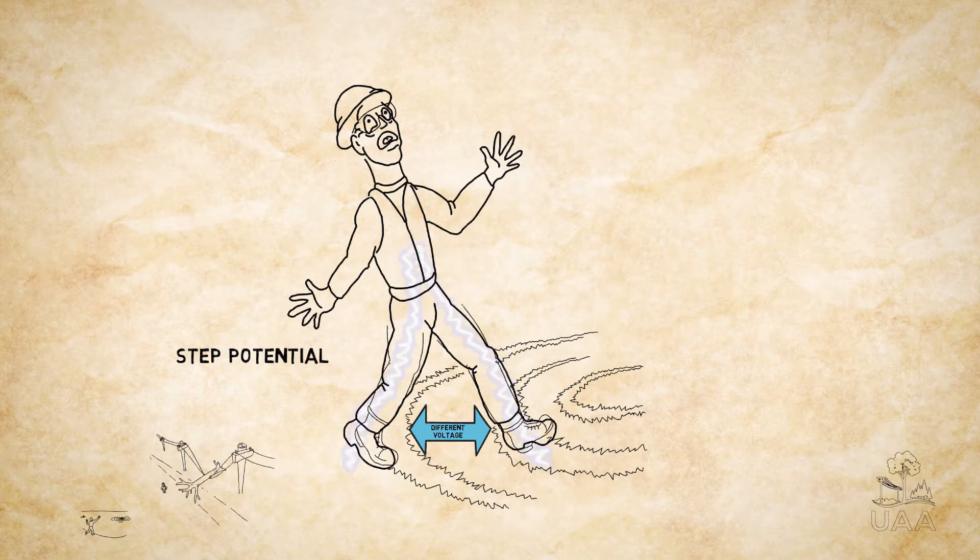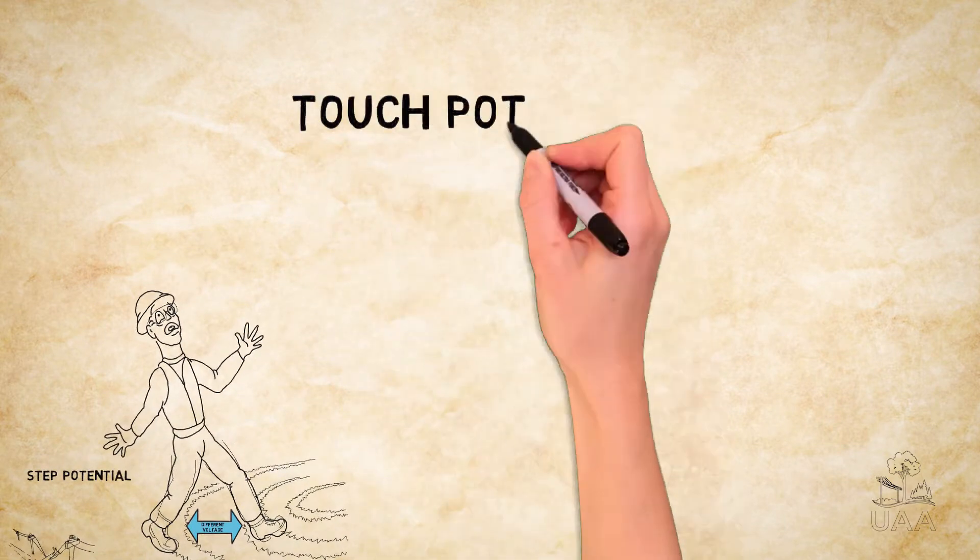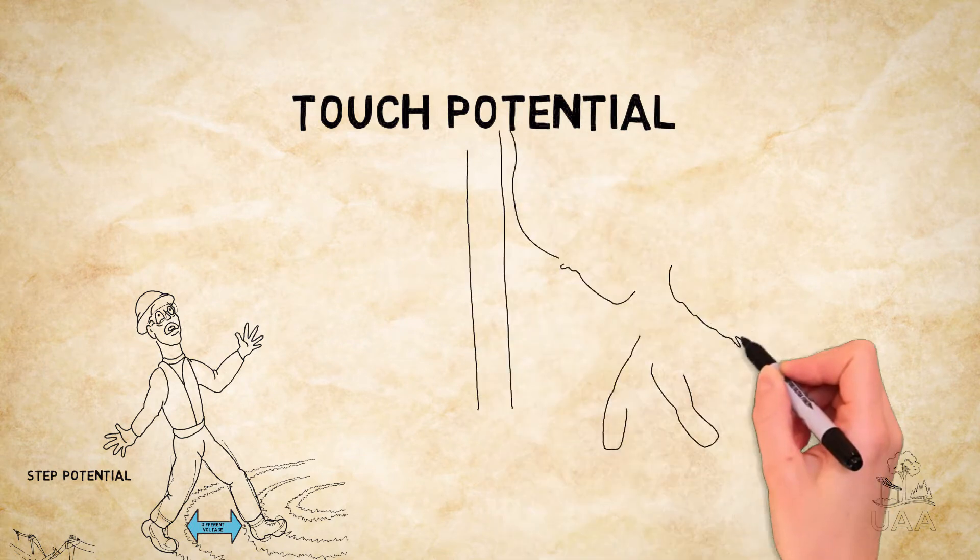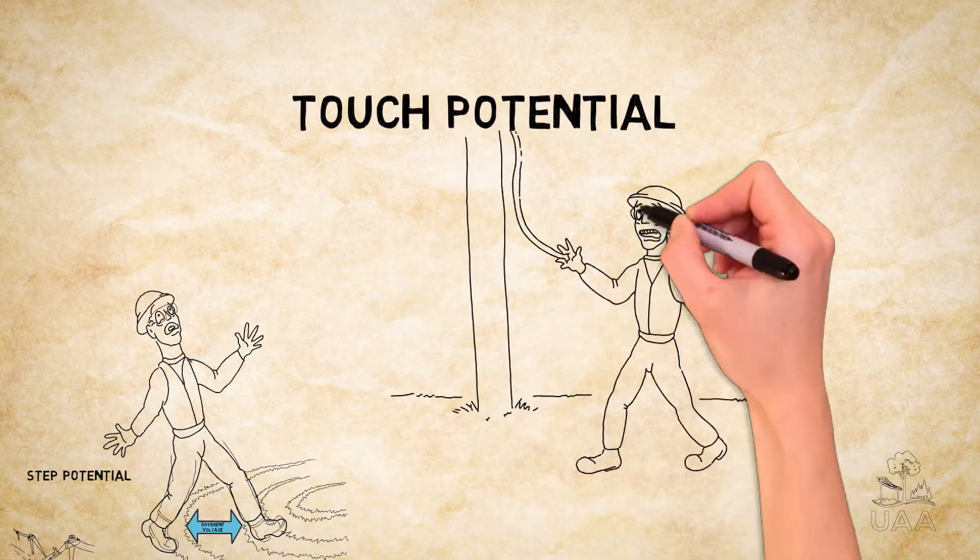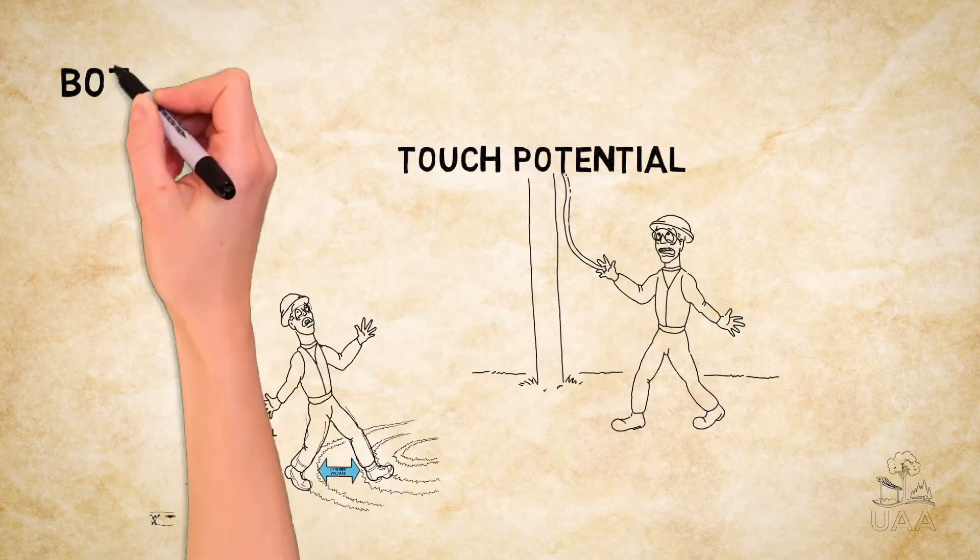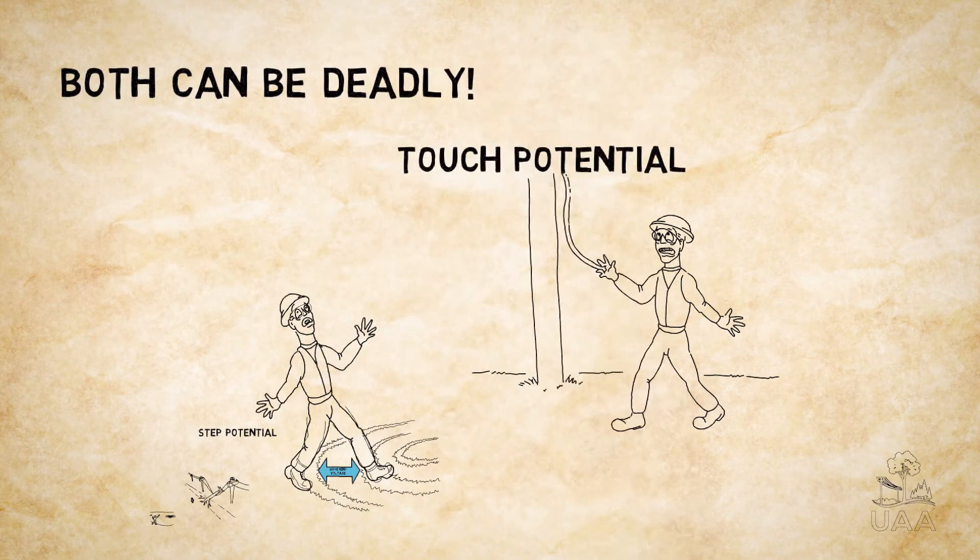This creates a potentially dangerous electrical event for that individual. Touch potential is the voltage difference between any two points on a person's body when they touch an electrically charged object. In this instance, dangerous electrical currents will travel through a person's body to get to an exit point on the ground.